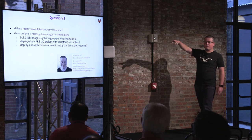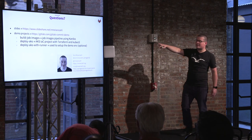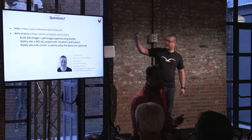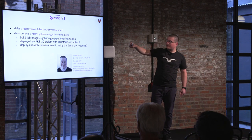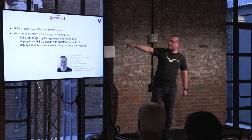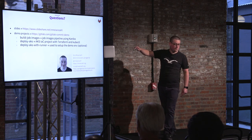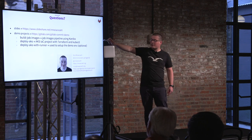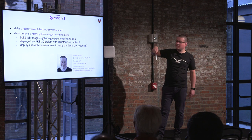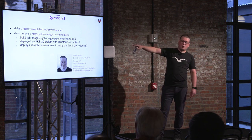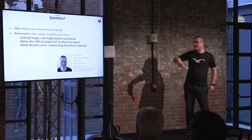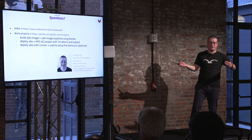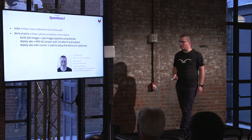My slides are already online. If you'd like to see them — the whole demo project. I planned to do a live demo but it wasn't possible with the setup. You can find the whole project on GitLab. The first one, BuildJob image, is the pipeline using Kaniko to run your build job container image. The deploy AKS is the project we saw in the slides. The last one is an optional project to spin up a Kubernetes cluster and deploy the GitLab runner to have a Kubernetes cluster to run your workload.